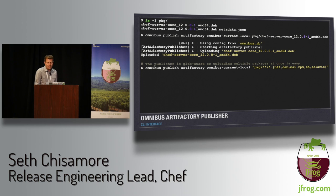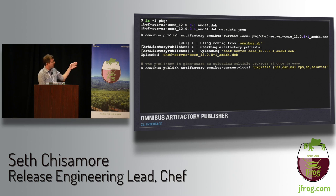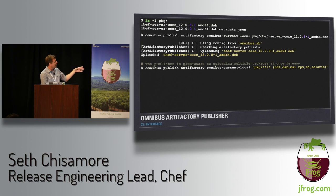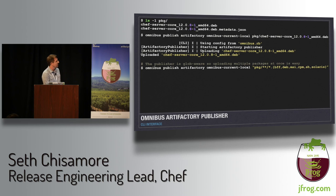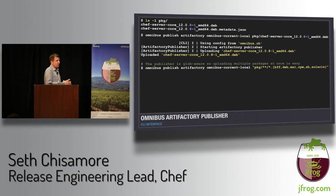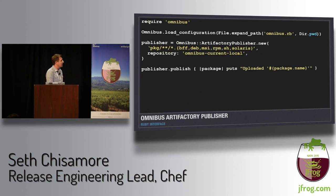The publisher assumes the metadata JSON file lives alongside the package in the same directory. The command is 'omnibus publish artifactory' followed by a repo name and path to the artifact. The instance endpoint credentials are in the Omnibus config file loaded by default. The publisher is glob-aware — you can upload multiple packages at once. In this example it would upload any artifact in the pkg directory and subdirectories ending in a supported extension: BFF, Deb, MSI, and so on. If you had the whole output of a Jenkins build, you could throw it at that glob and everything uploads.